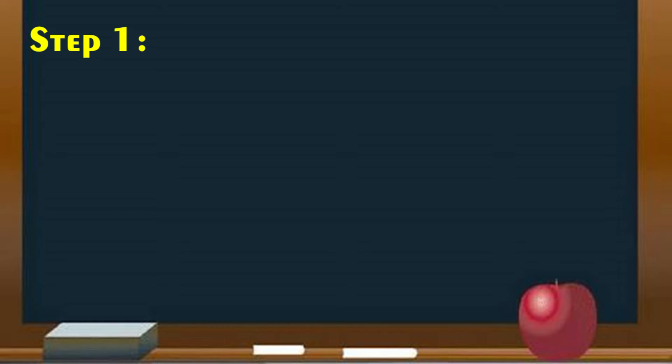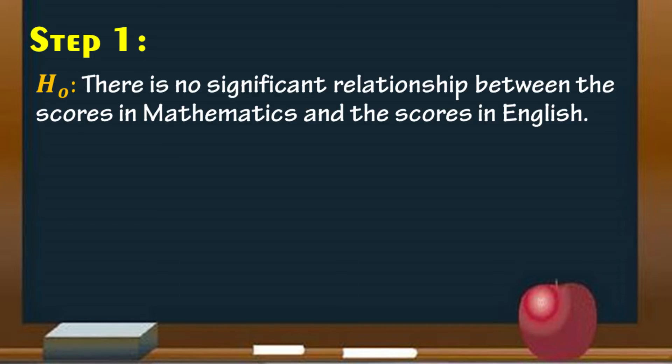Let's do step number one: state the null and alternative hypothesis. Since we are testing the relationship between the scores in math and the scores in English, the null hypothesis will be stated as: there is no significant relationship between the scores in mathematics and the scores in English. In symbols, we have H sub O where R is equal to 0. Zero indicates that there is no significance between the two variables.